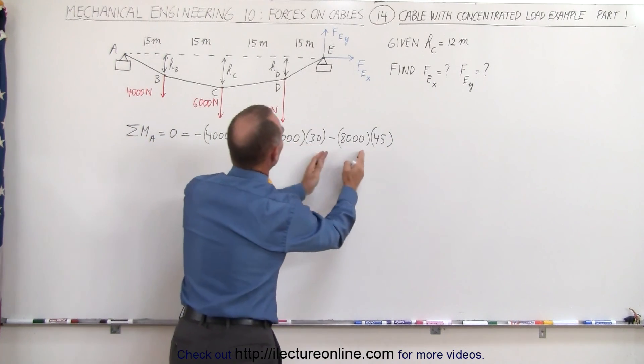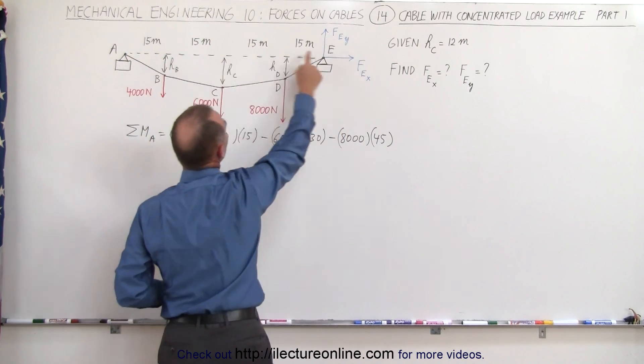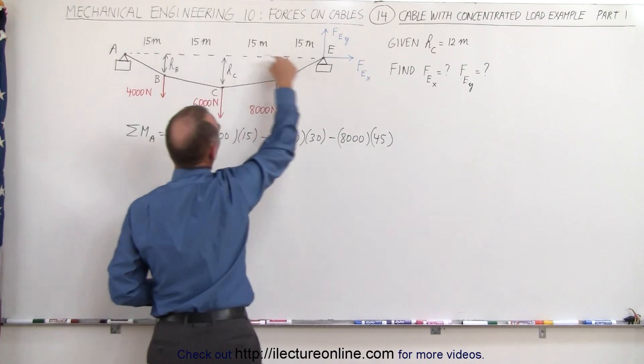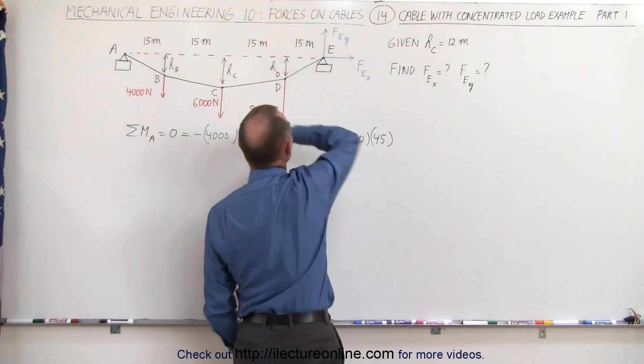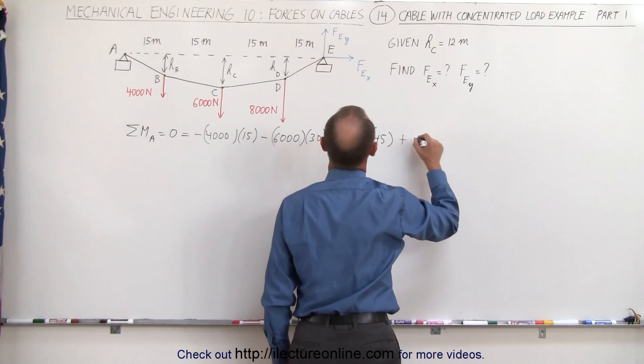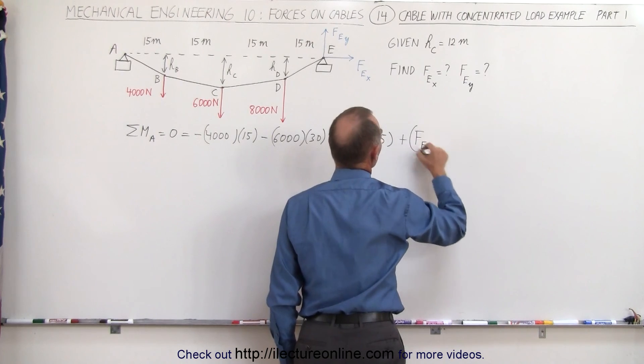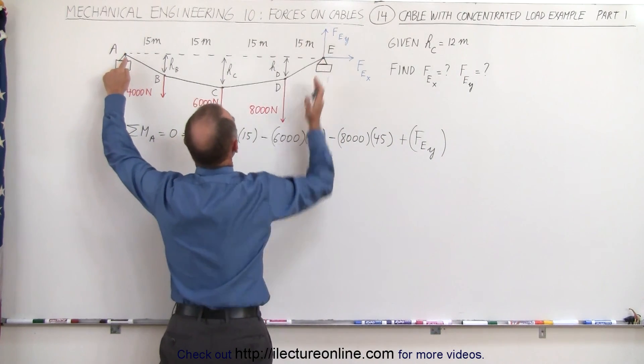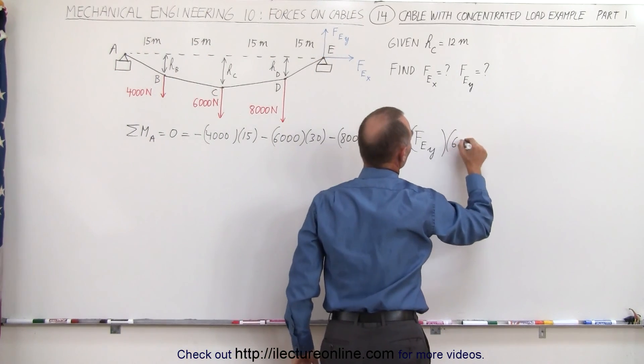We now have our three loads. The only force remaining causing a moment about point A would be the force in the y direction. The force in the x direction, the line of action goes right through that point—don't have to consider it. This will give us a counterclockwise moment, therefore plus the force at point E in the y direction, and the perpendicular distance is a total of 60 meters.